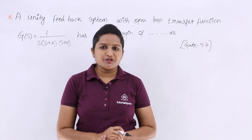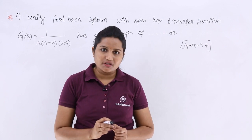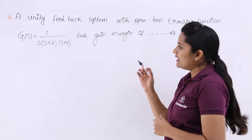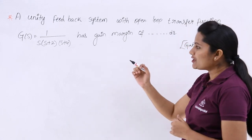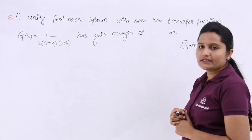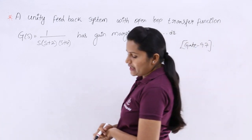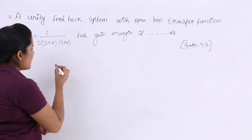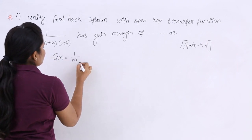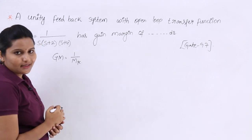In this video we are going to solve one more GATE problem related to gain margin in a shortcut way. The problem states: a unity feedback system with open loop transfer function G(s) equal to 1 divided by s(s+2)(s+4) has a gain margin of? The formula to calculate gain margin is: gain margin equals 1 divided by the magnitude at the phase crossover frequency.